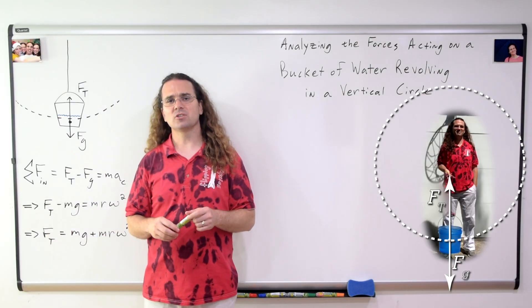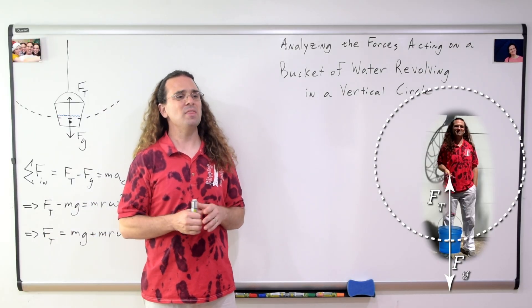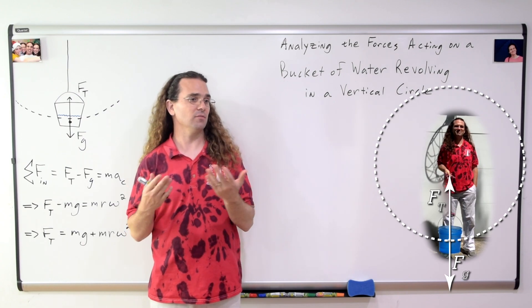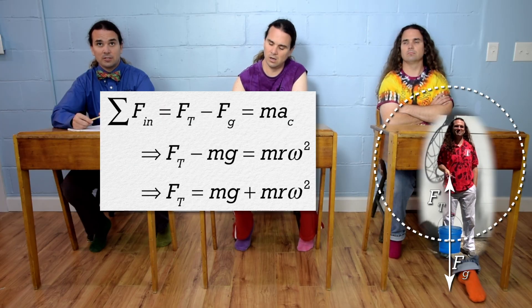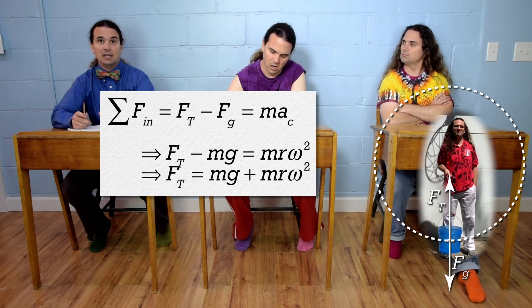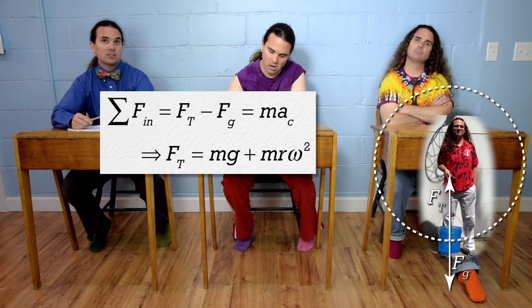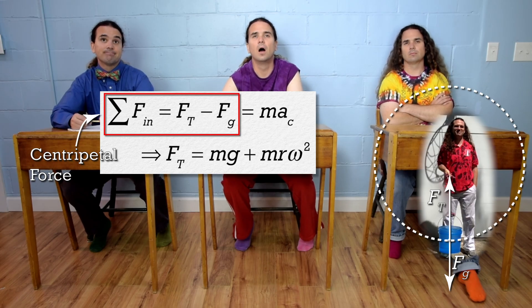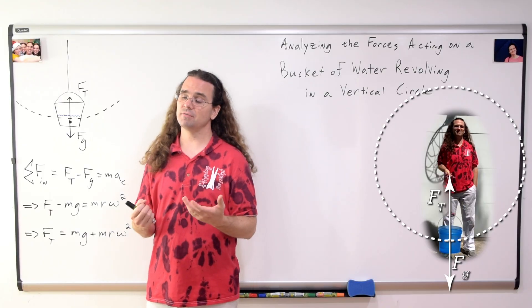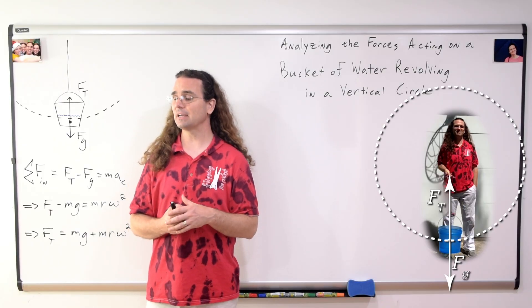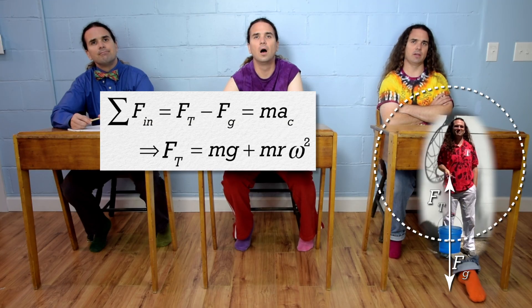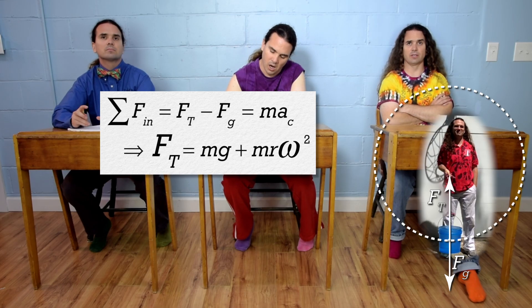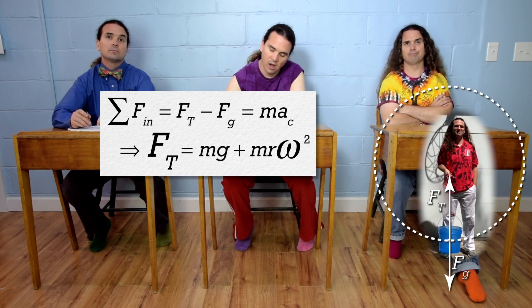A couple of things to talk about. First off, Billy, when the bucket is at the bottom, what is the centripetal force acting on the bucket of water? The centripetal force is the net force in the inward direction, so the centripetal force is the force of tension minus the force of gravity. That is correct. Bo, what happens to the force of tension if I increase the angular speed of the bucket? According to the equation, if the angular velocity is increased, that will also increase the force of tension. Also correct.